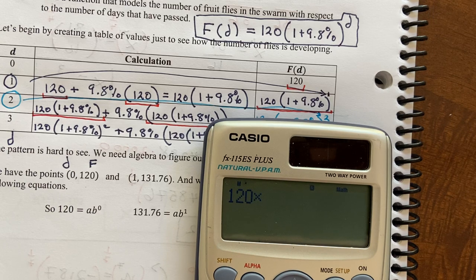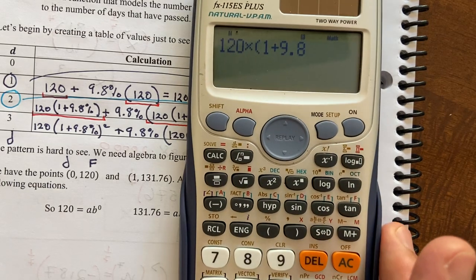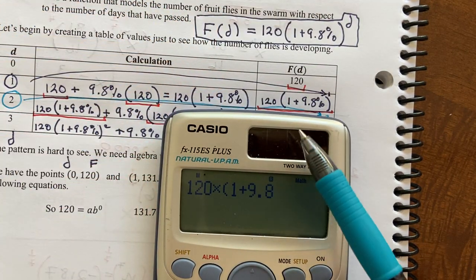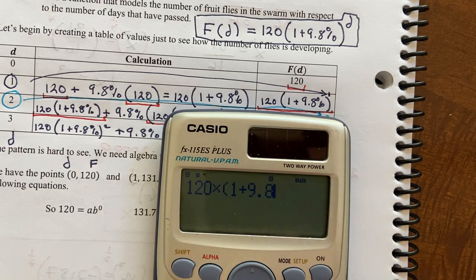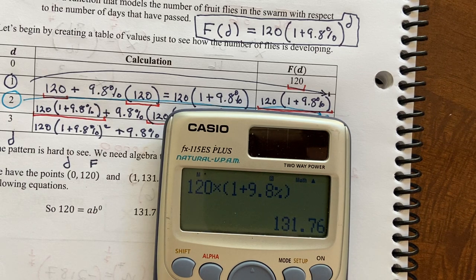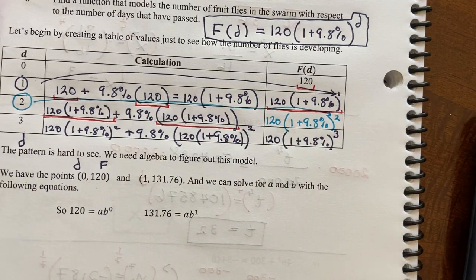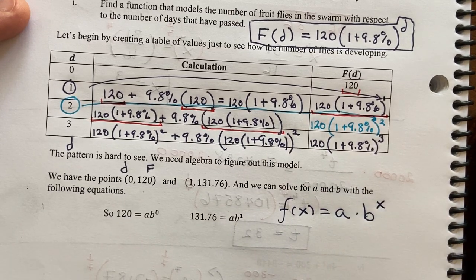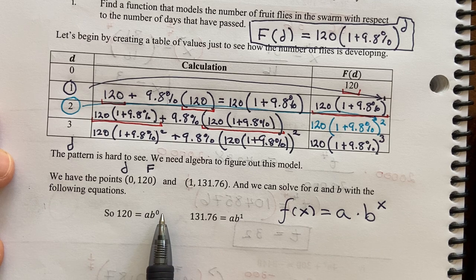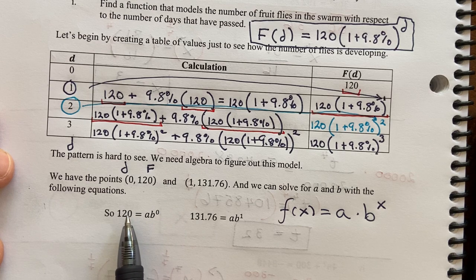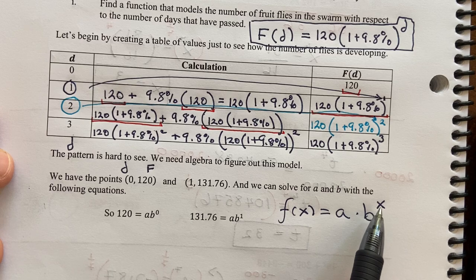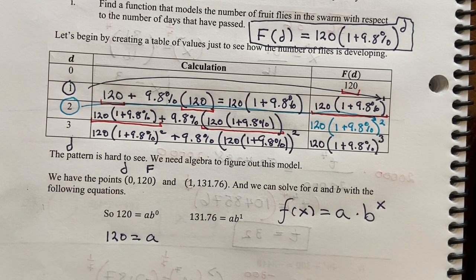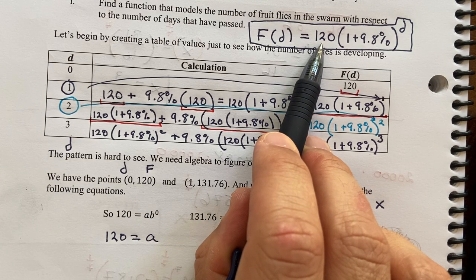Okay, so 120 times 1 plus 9.8%, and you need to type in percent. On my calculator, it's right here. You get a totally different number if you forget that percent. 131.76, that's how this number was derived. So we have two points. We have this general model as f(x) equals a times b raised to the x. When the time is 0, we have 120 flies. Since b to the 0 is 1, I know 120 is a.